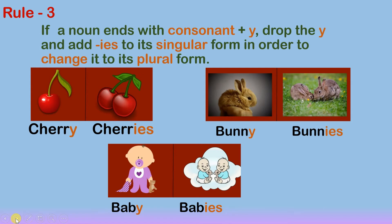One more example: baby, babies. The word 'baby' ends with letter Y and before the letter Y there is a consonant — letter B. So we drop the letter Y and add IES.